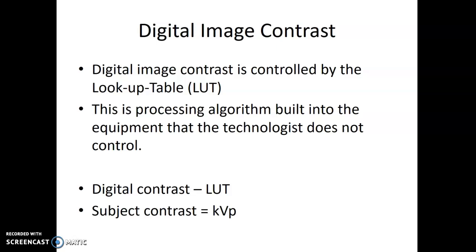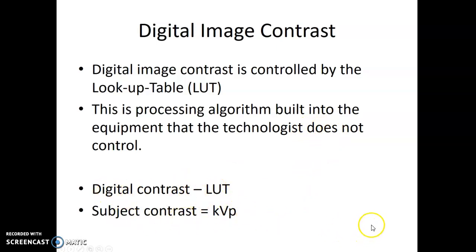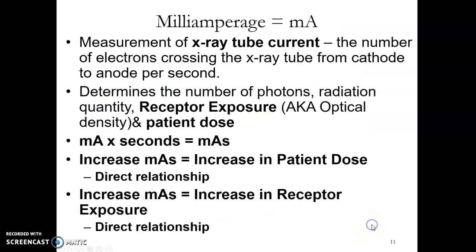For digital imaging, digital image contrast is controlled by the lookup table. Sometimes there are tricky questions in the wording. Subject contrast is KVP; digital contrast is the lookup table. Digital contrast is a processing algorithm built into the equipment, and the technologist does not control it. So: digital contrast — lookup table; subject contrast — KVP. These are terms you will have on your boards, so please start making notes now.